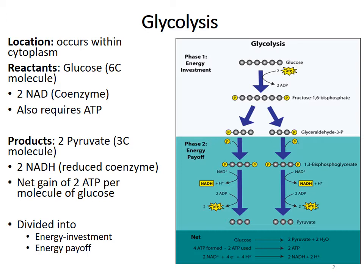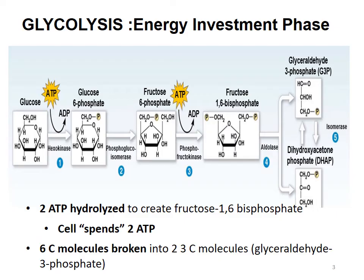Glycolysis can be divided into the energy investment phase and the energy payoff phase. In the energy investment phase of glycolysis, we take glucose and spend 2 ATP — two ATP are hydrolyzed — and we stick a phosphate group on either end of the glucose to get fructose 1,6-bisphosphate.